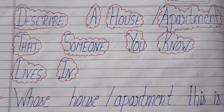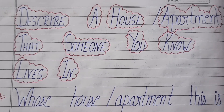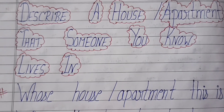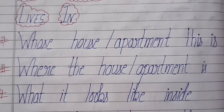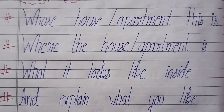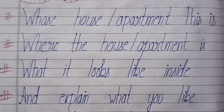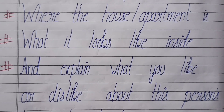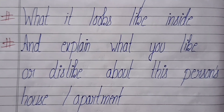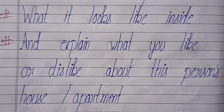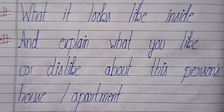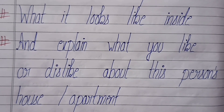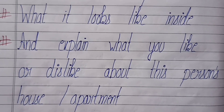Today I am here to share with you a new cue card, and that is: Describe a house or apartment that someone you know lives in. Ek aise ghar ya apartment ko describe karo jis mein aapki pehchan ka koi person jo wo rehta hai. The bullet points for this cue card are: Whose house or apartment this is? Where the house or apartment is? What it looks like inside? And the last bullet point: explain what you like or dislike about this person's house or apartment.